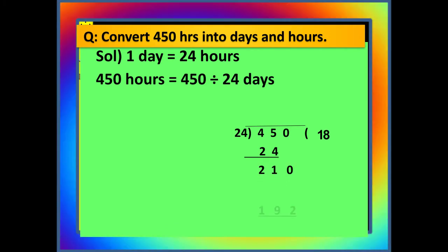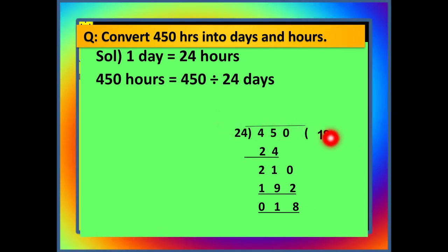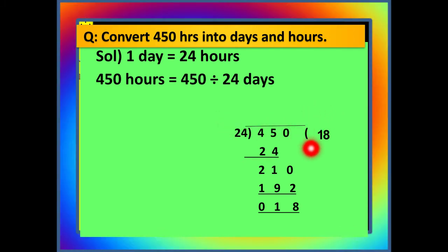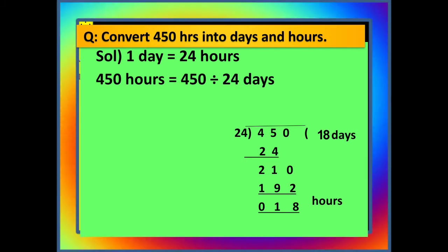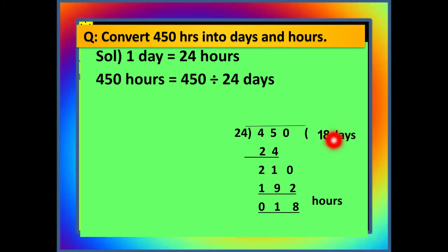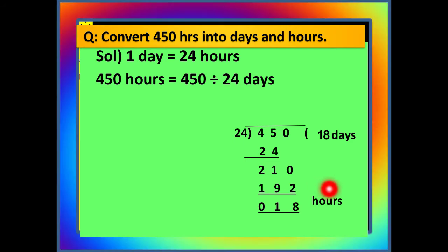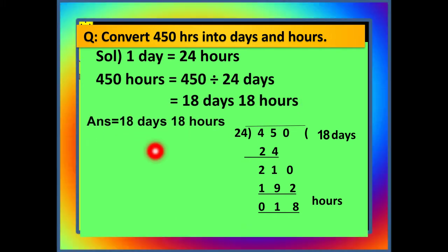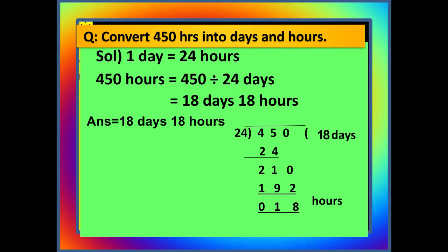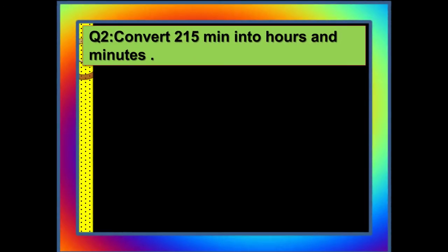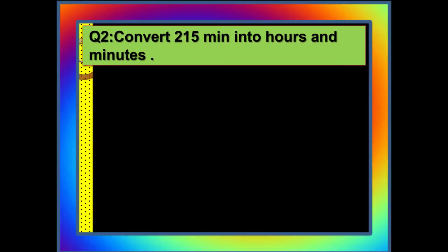When we divide 450 by 24, we get 18 as our quotient and 18 as our remainder. The 18 in the quotient represents the bigger unit, that is days, and the 18 in the remainder represents the smaller unit, which is hours. So 450 hours has 18 days and 18 hours in it.